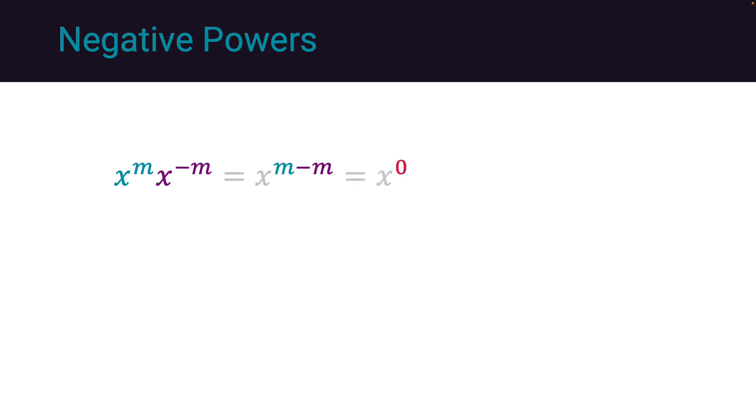This produces x to the power of 0, which we have previously determined to be exactly 1. For this to be true, it requires x to the power of negative m to be exactly 1 over x to the power of m.